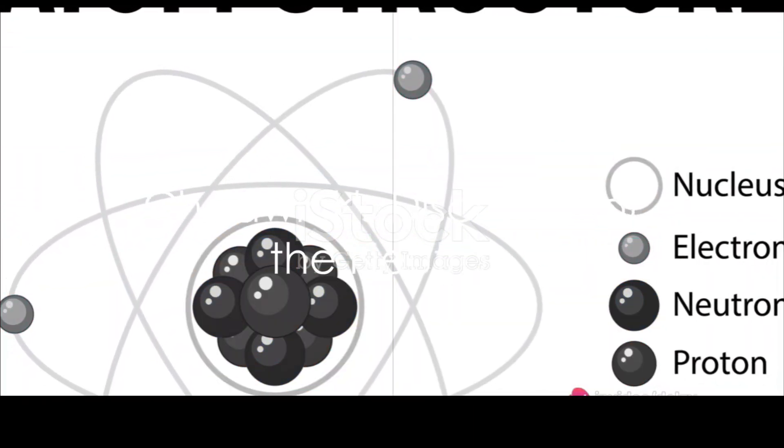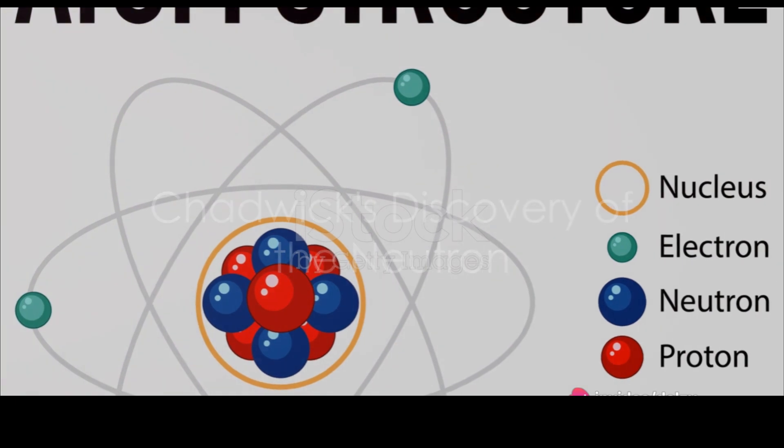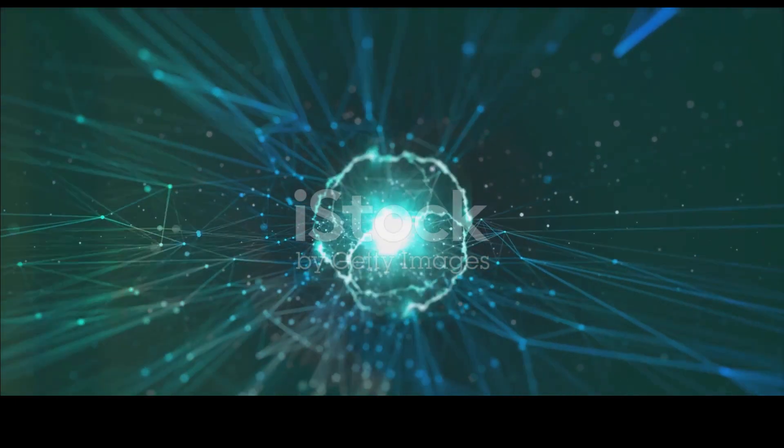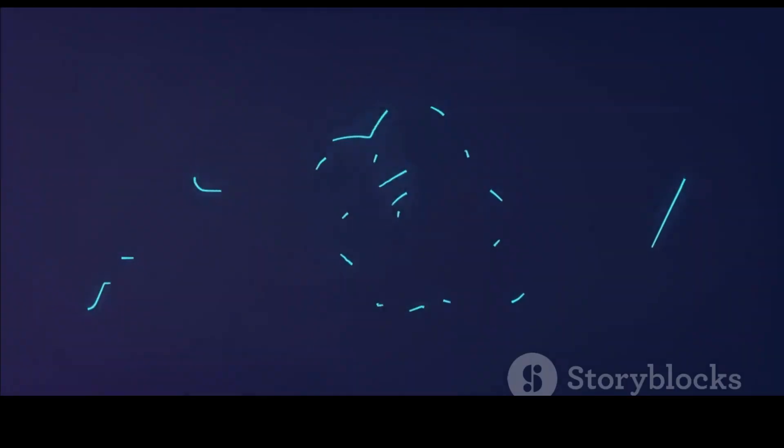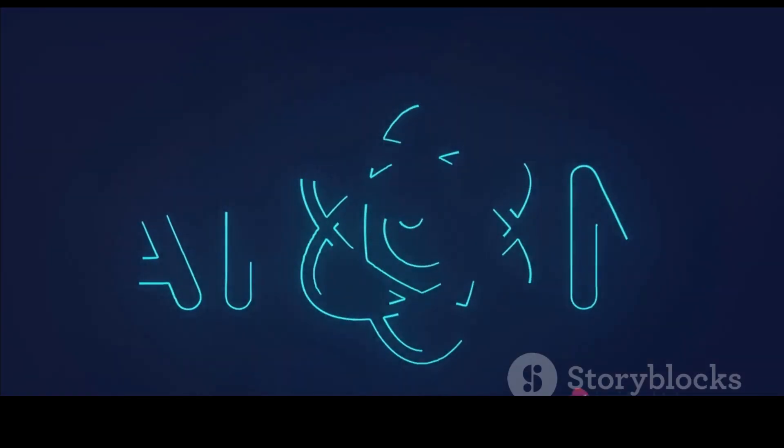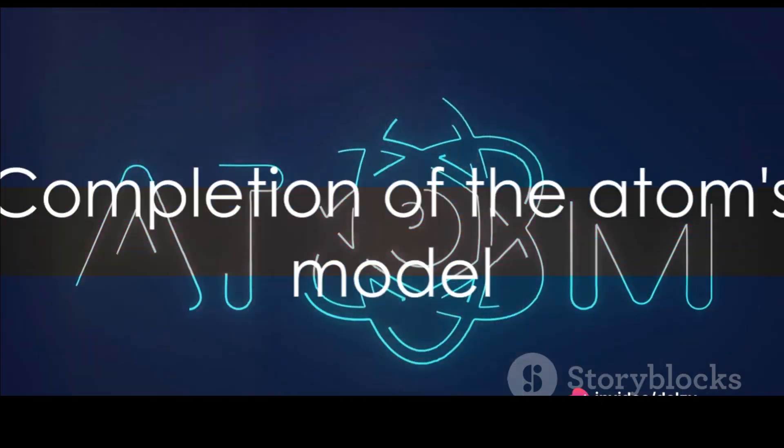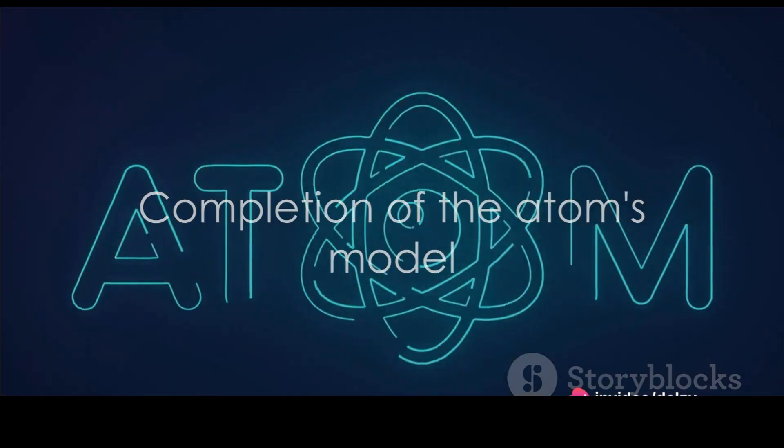The discovery of the atom's components didn't stop there. In 1932, English physicist James Chadwick discovered the neutron, a particle with no charge, residing in the atom's nucleus alongside protons. This discovery completed the picture of the atom as we know it today.